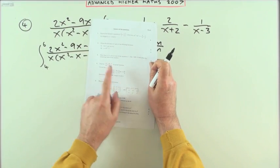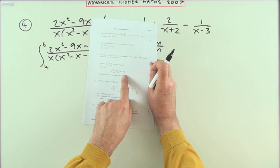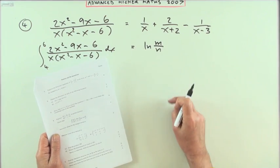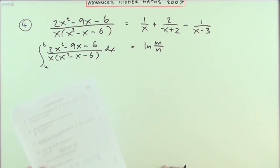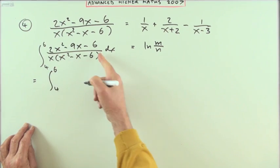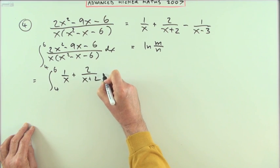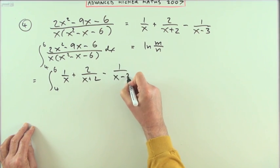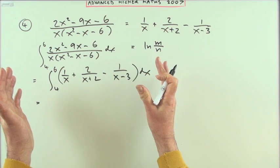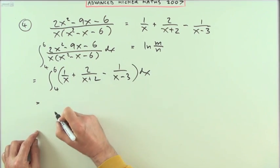Now the second part, as you might have expected, says carry out an integration, because that was the whole point of it usually. It's saying show that it comes into this form ln(m/n), finding the values of these integers m and n. So obviously what you're going to do is take that rational expression and break it into these three little parts: 1/x, 2/(x+2), and -1/(x-3), which can be integrated because none of them need any refinement.